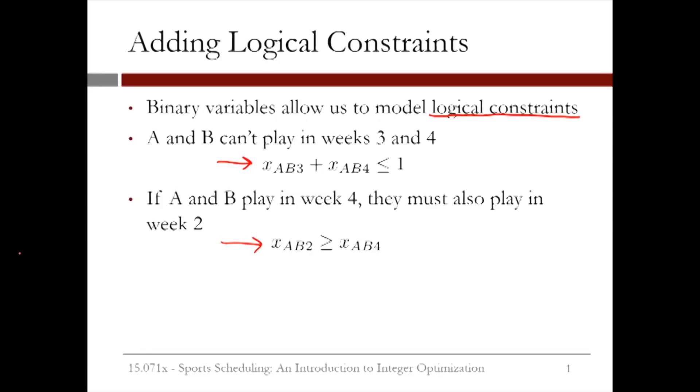Let's consider feasible solutions to this constraint. If xAB4 equals 1, then xAB2 must also equal 1. But if xAB4 equals 0, then xAB2 can be equal to either 0 or 1. So this constraint exactly models the restriction we wanted.